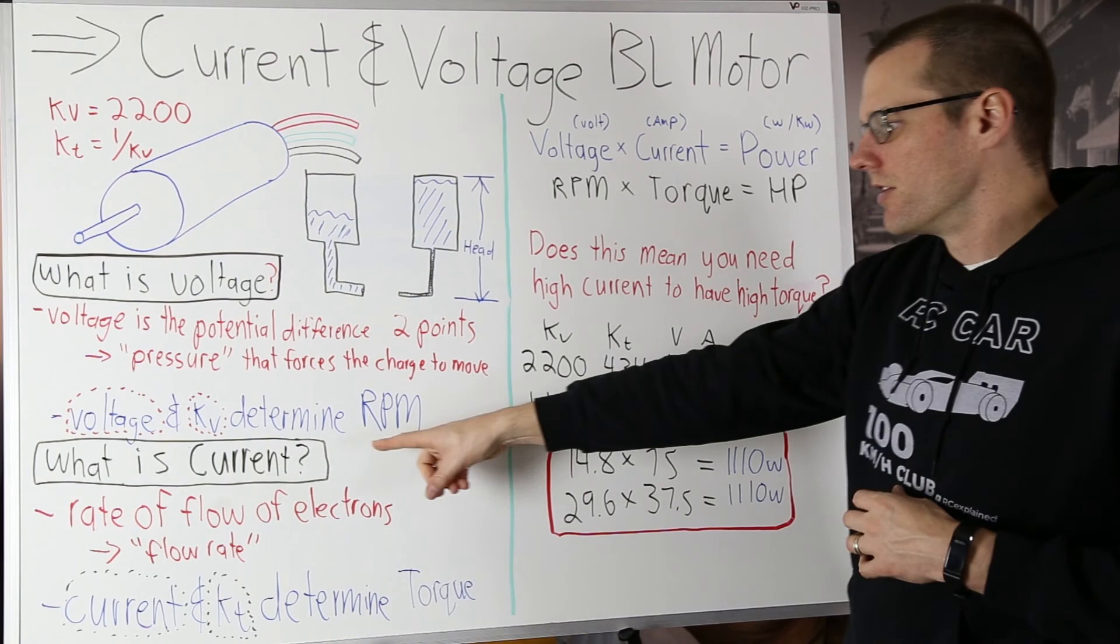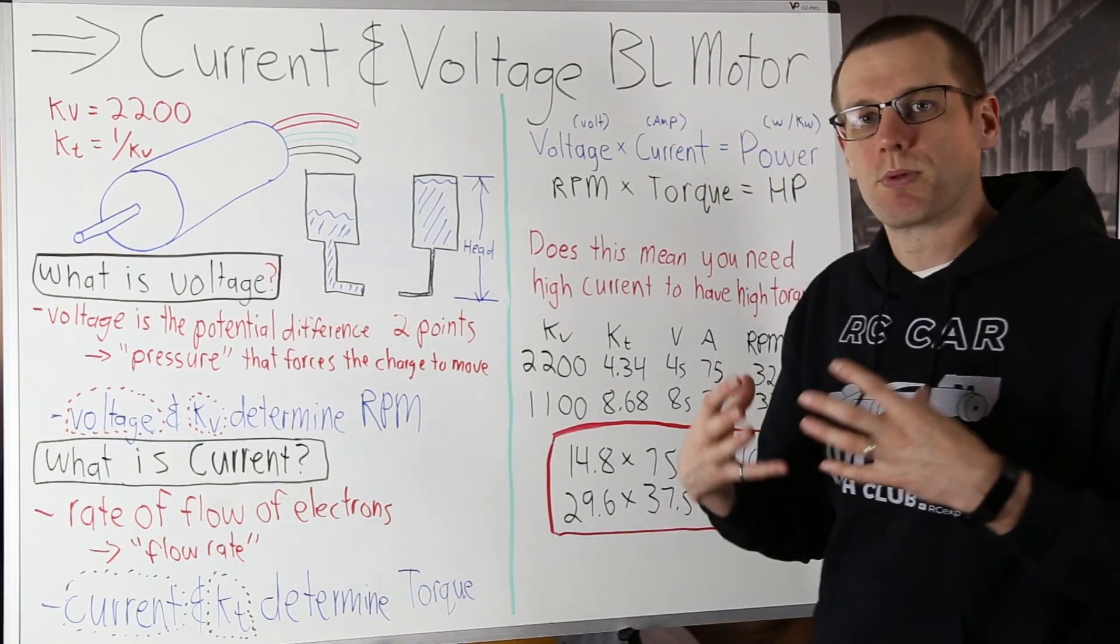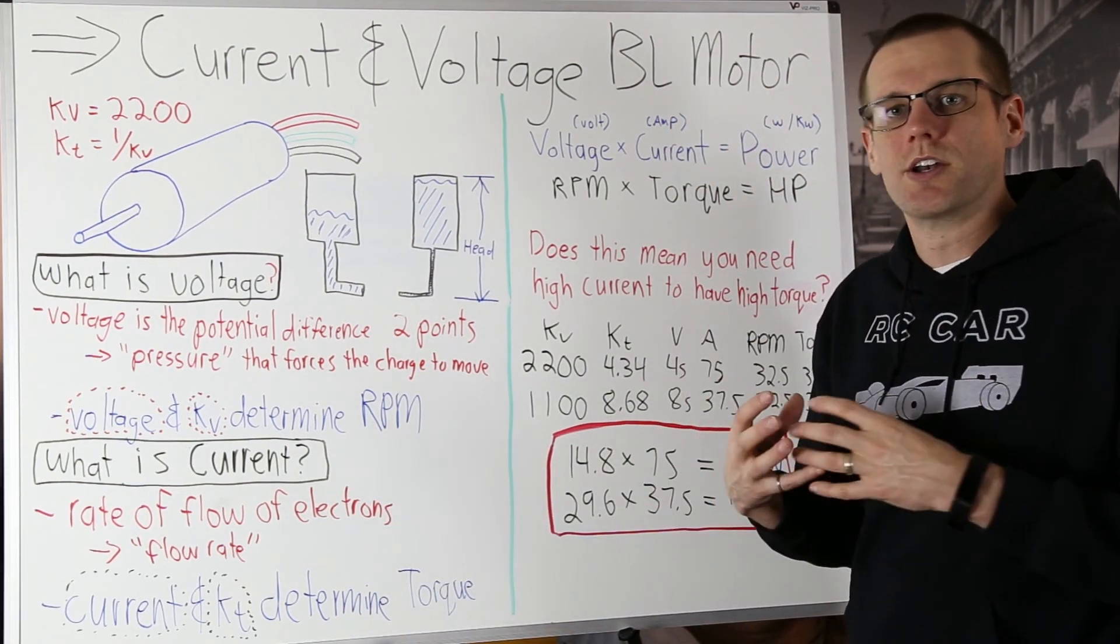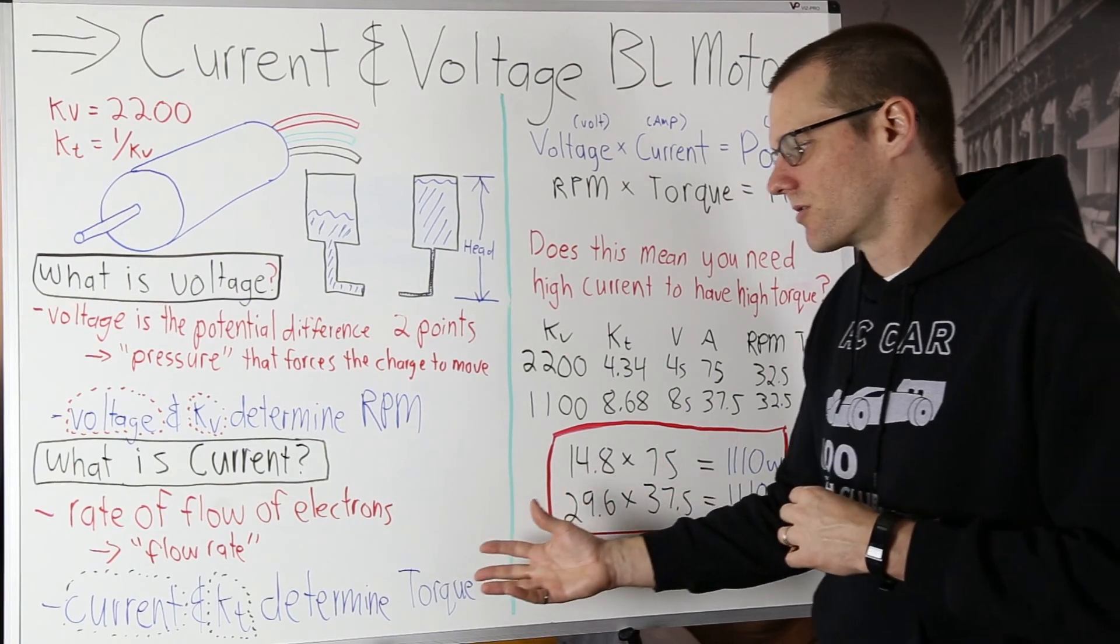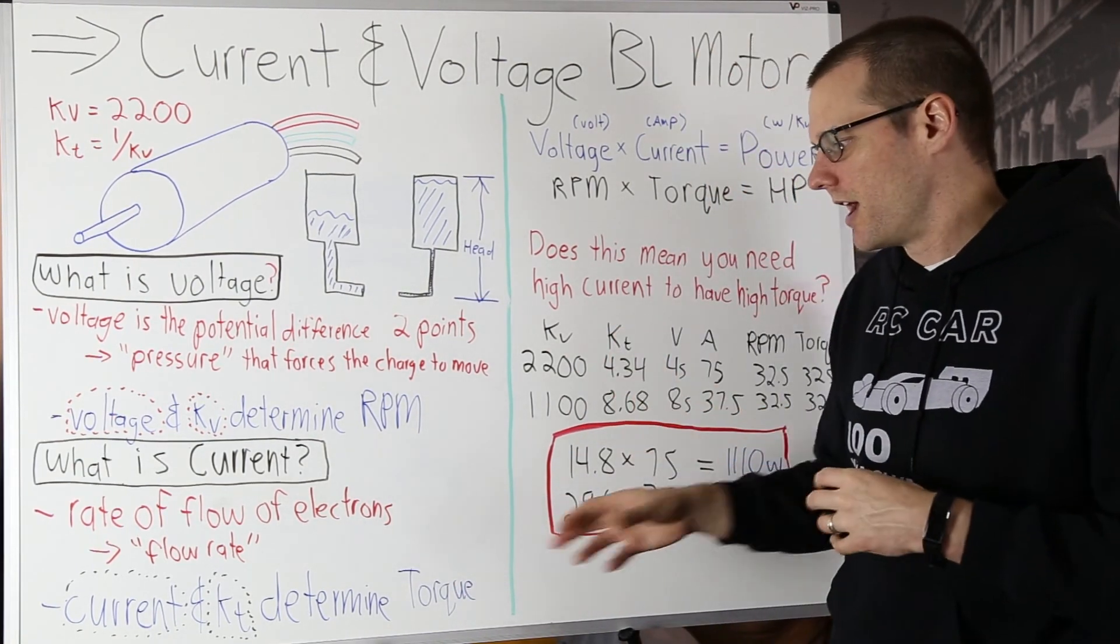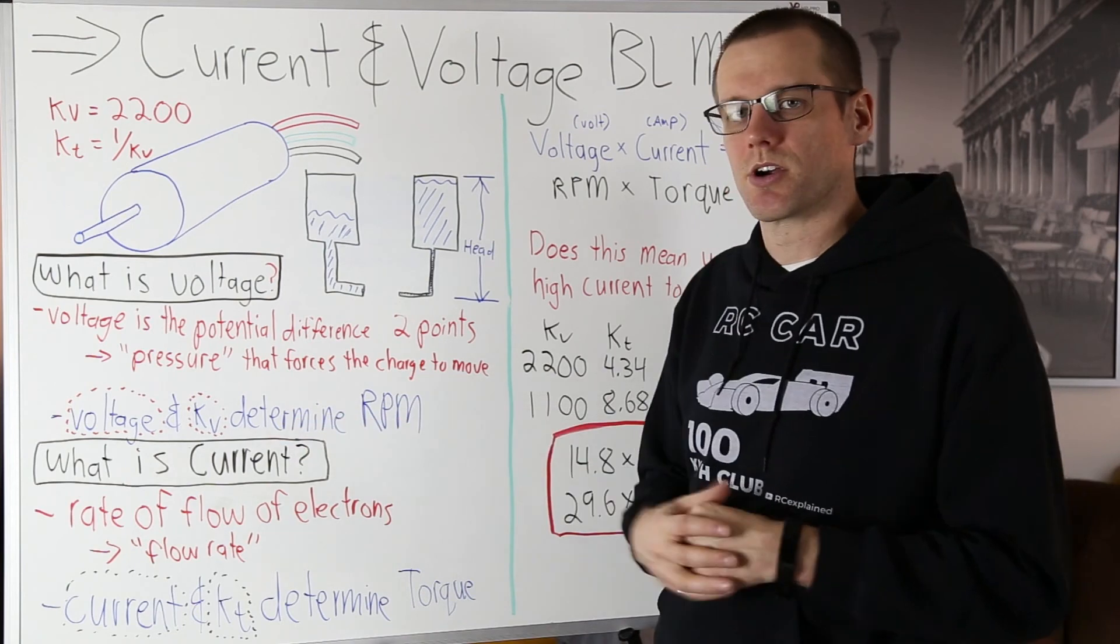The load that you place on that motor is going to be directly related to the current. Why do we know that? Well, we just went through that current is related to torque. And if you're placing more of a load on your application, that means it's going to require more torque to twist that load. And then what does that do? Drives up your current.